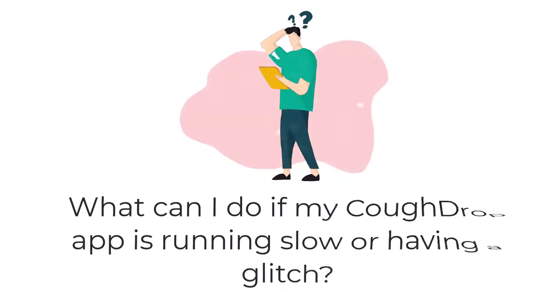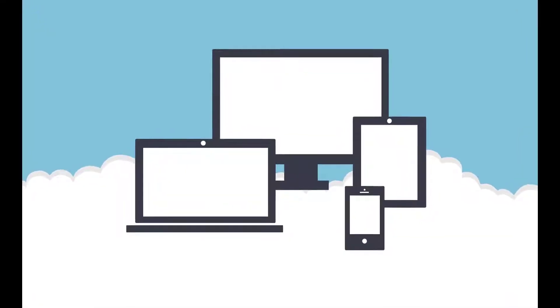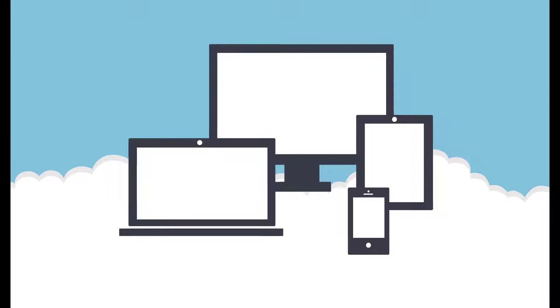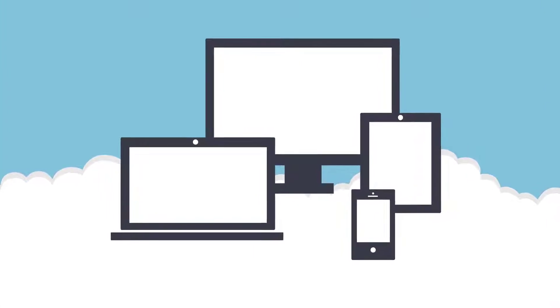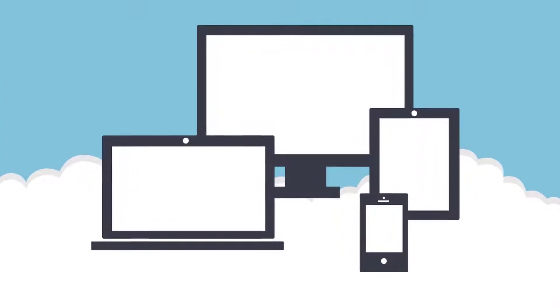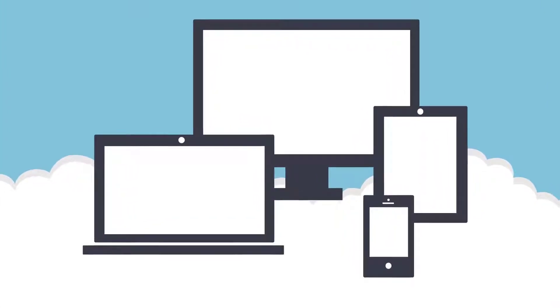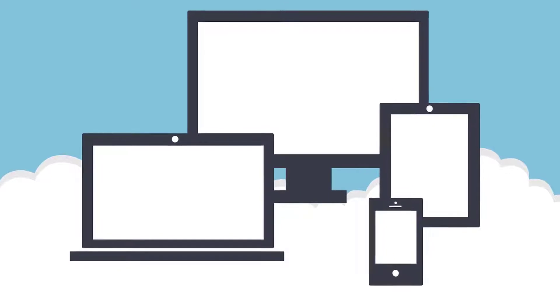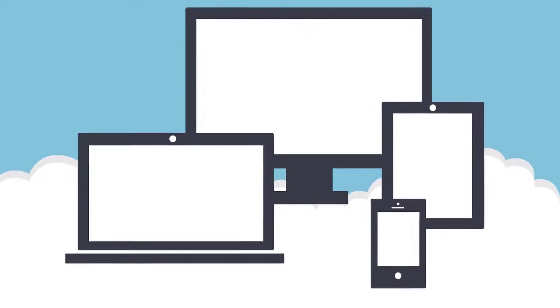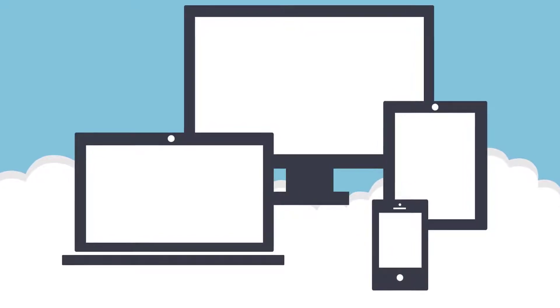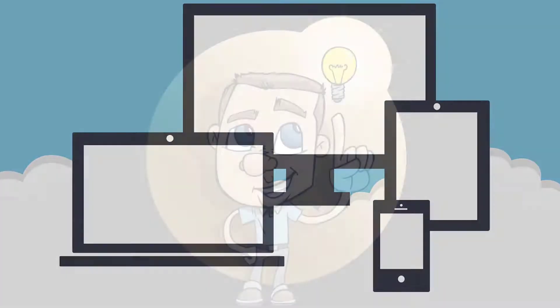Welcome to CoughDrop! What can I do if my app is running slow or having a glitch? CoughDrop is a cloud-based app that will run on nearly any device. That means there are hundreds of device options out there for using CoughDrop, which is a big benefit but can also make things a bit tricky as every device is different.